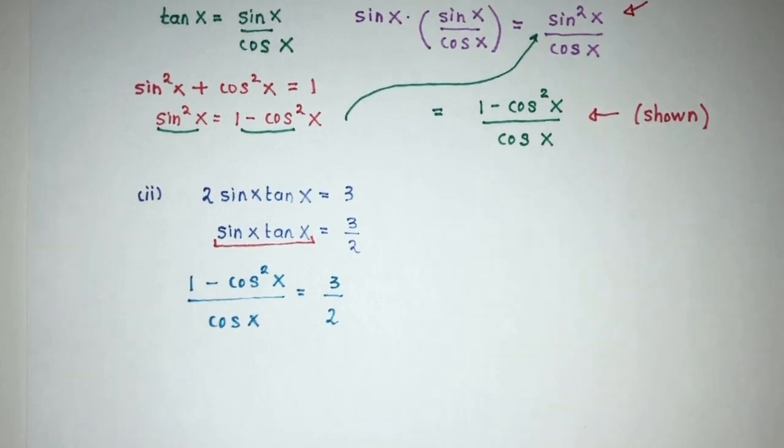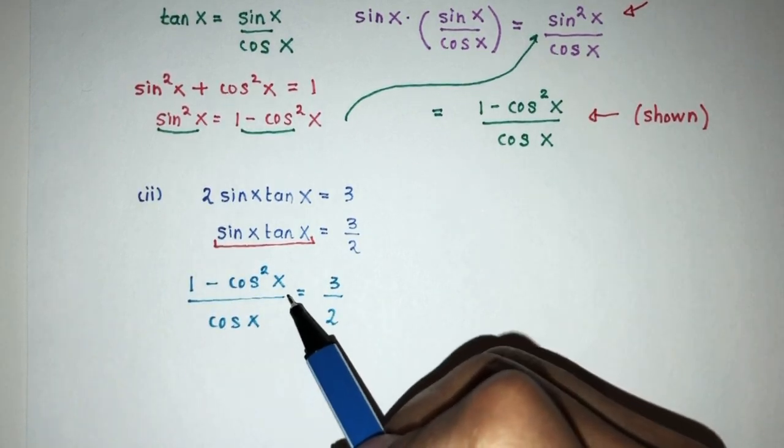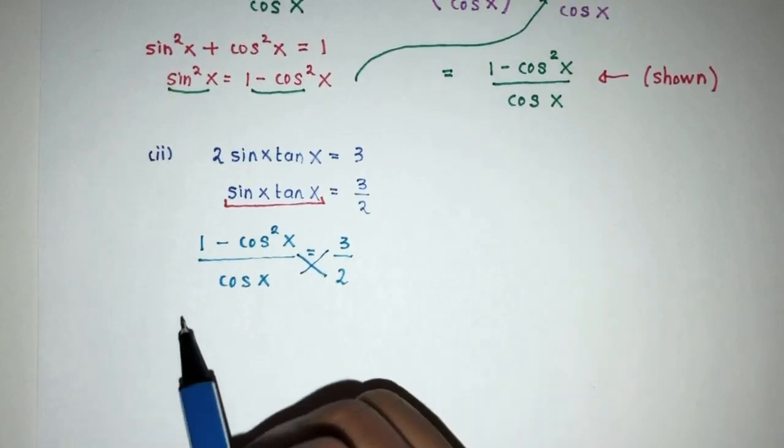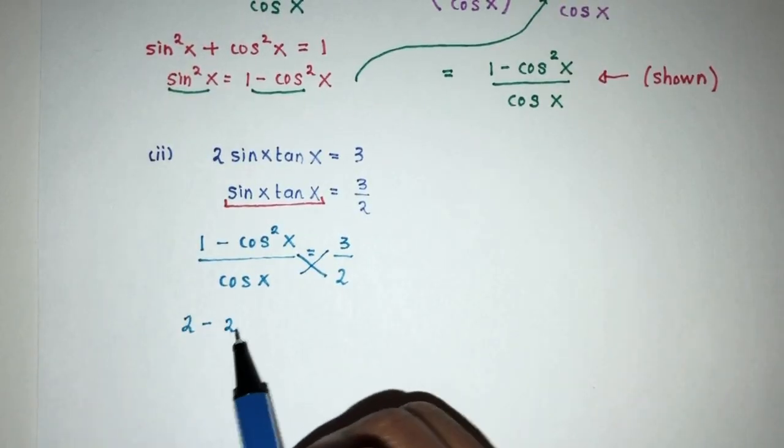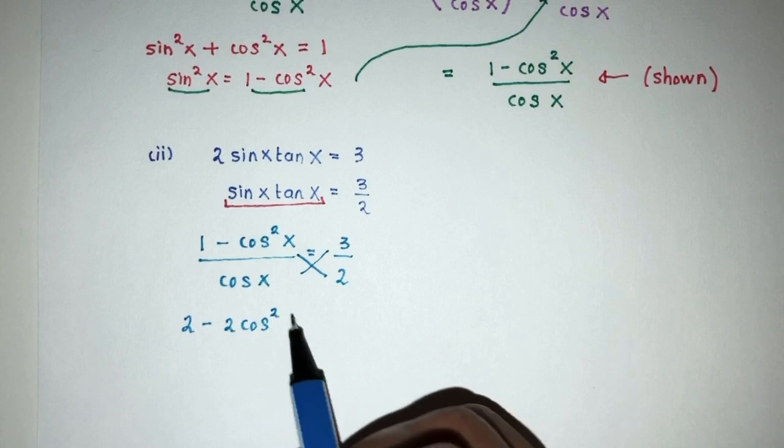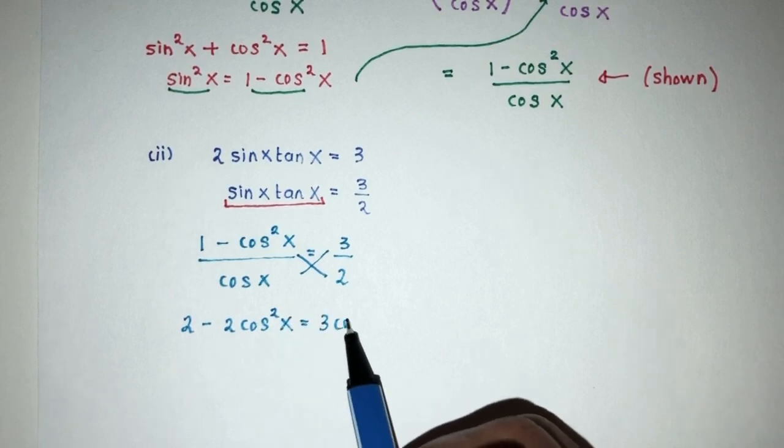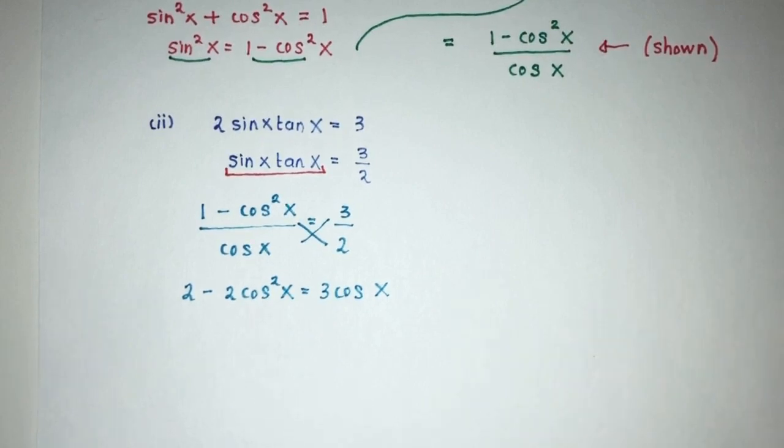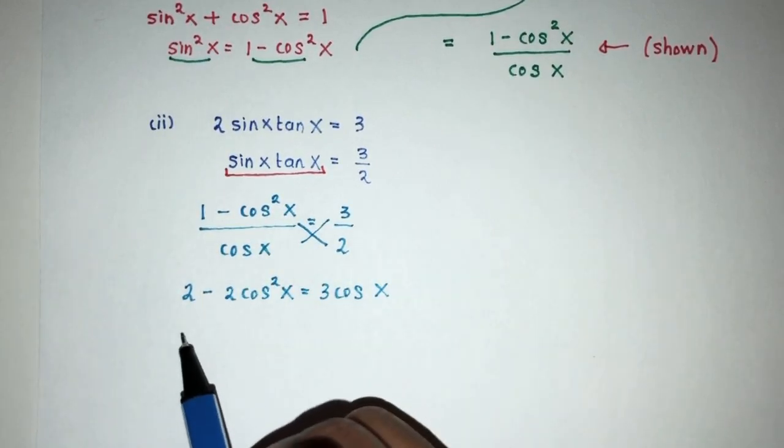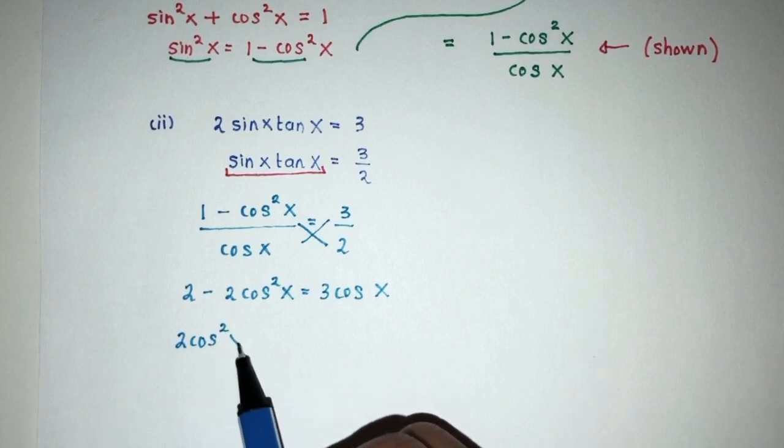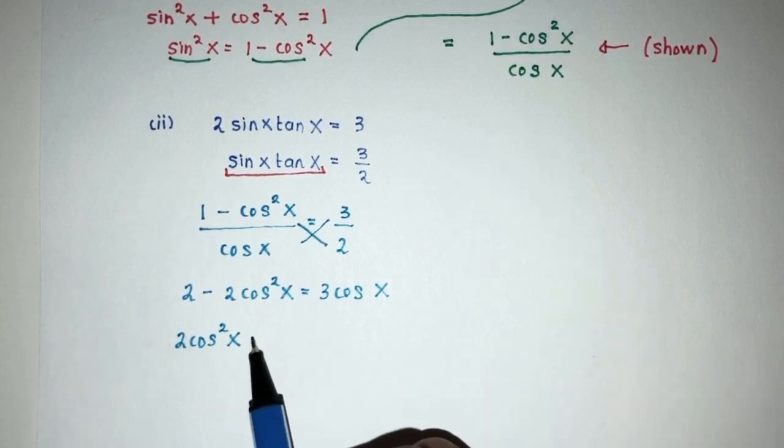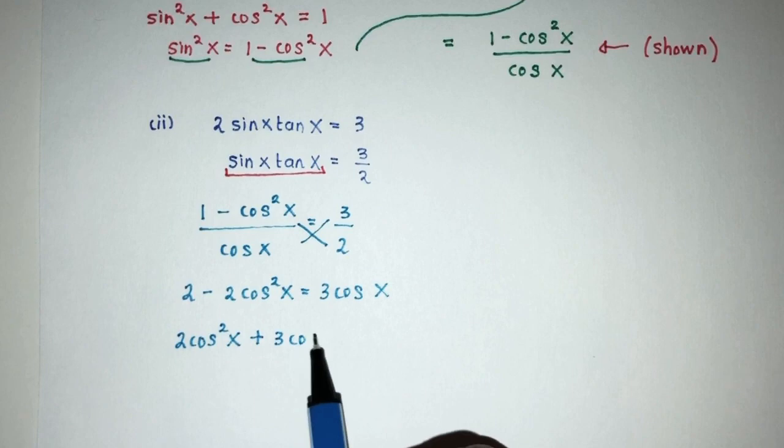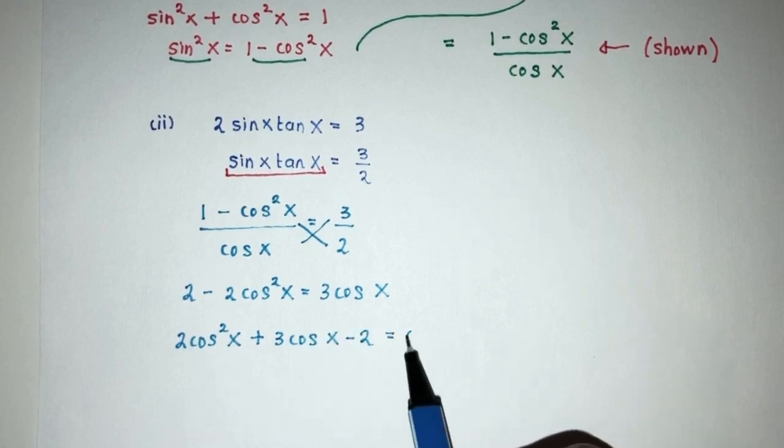So now we have something to solve. Now the first step is whenever we have fraction equal to fraction, usually we think about doing a cross multiplication. Okay, so you will have 2 minus 2 cos square x is equal to 3 cos x. We have this. Now let's rearrange. Let's send everything to one side. You will have 2 cos square x, then plus 3 cos x, then minus 2 will be 0.